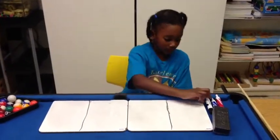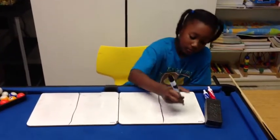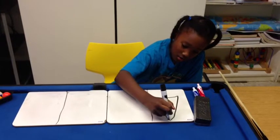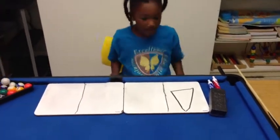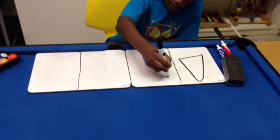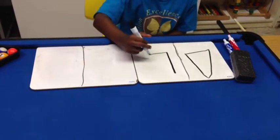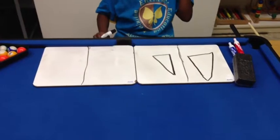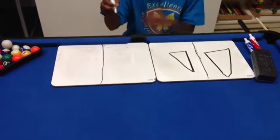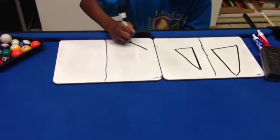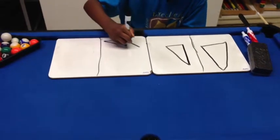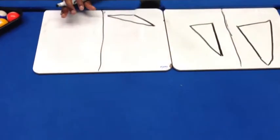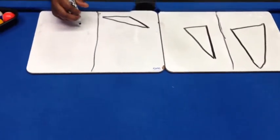Now I'm going to show you different triangles. We're going to do the isosceles triangle. The isosceles triangle has two equal sides. Now I'm going to do the right triangle — we have the L and then draw like that. The right triangle has one right angle. Now I'm going to do the obtuse triangle. The obtuse triangle has one obtuse angle.